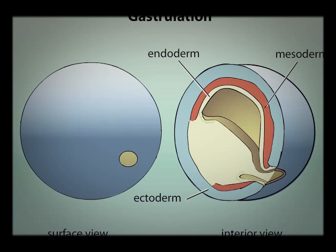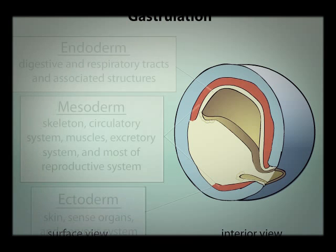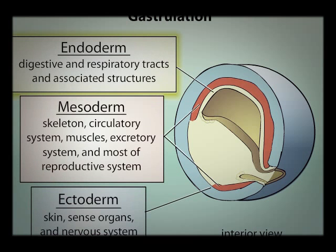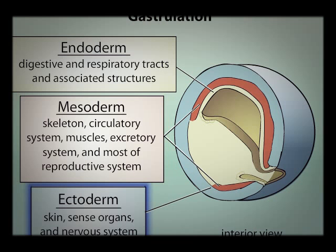Additionally, the fates of specific regions have become determined. The endoderm gives rise to the digestive and respiratory tracts and associated structures. The mesoderm gives rise to the skeleton, circulatory system, muscles, excretory system, and most of the reproductive system. The ectoderm gives rise to the skin, sense organs, and nervous system.